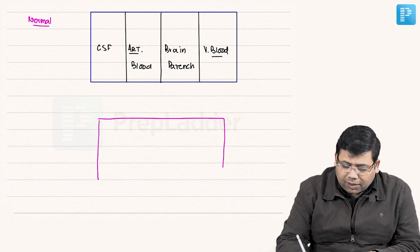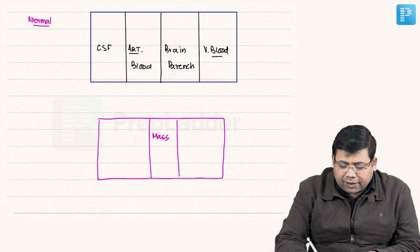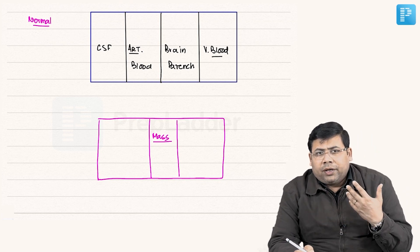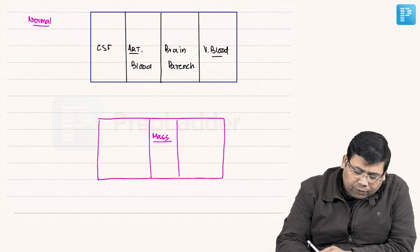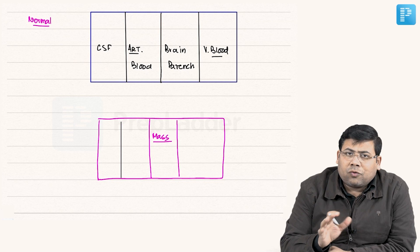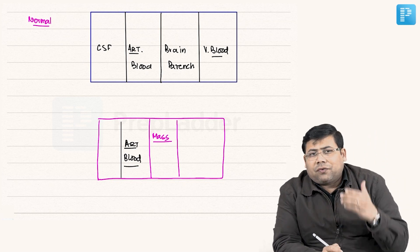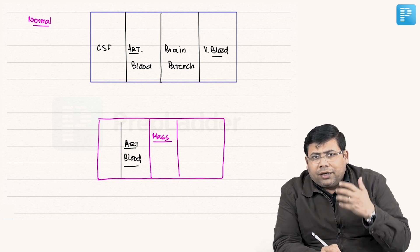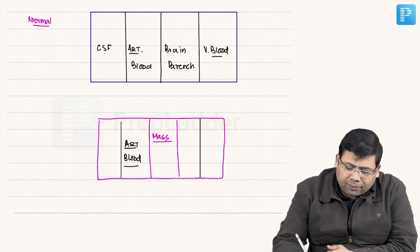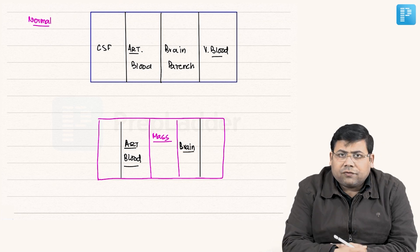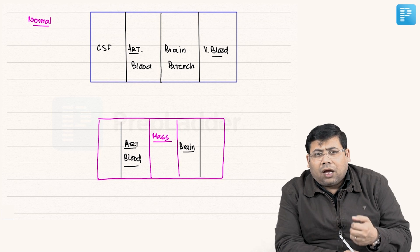Now try to understand what happens in case of a mass. Imagine there is a mass inside the skull — like a guest. This could be a tumor or a hemorrhage. Accommodating this mass is a big challenge. The skull is not going to expand, and so is the arterial blood — it will not compromise because if it goes down, the complete brain will become ischemic. The brain parenchyma is also very important for body function and will not change. So who will accommodate this mass?